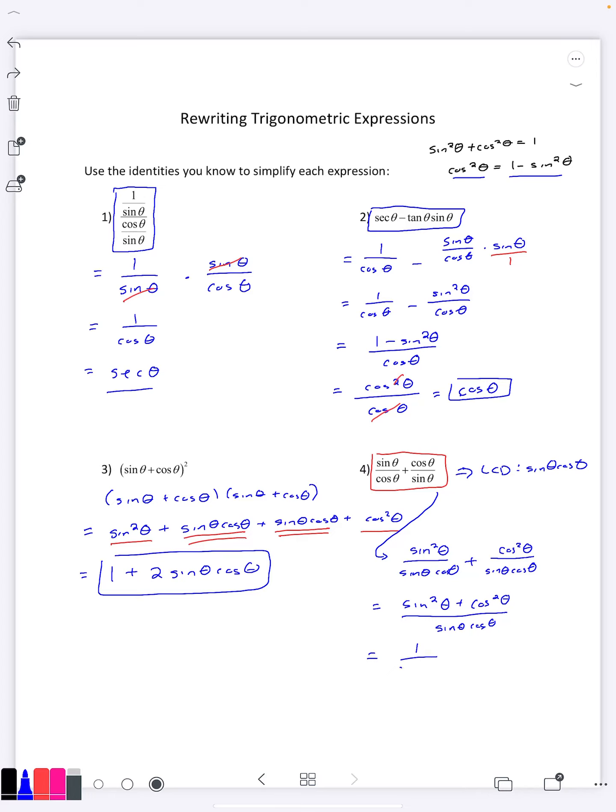You may or may not realize immediately that this is the same as if we had one over sine theta times one over cosine theta. I do this so that I can go ahead and say one over sine theta is cosecant theta.